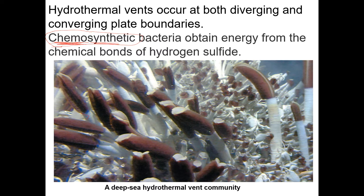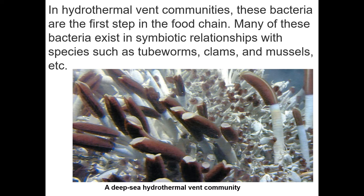Chemosynthetic bacteria grow in the dark at the bottom of the ocean, using hydrogen sulfide from hydrothermal vents as an energy source. These bacteria are eaten by tube worms, which are then eaten by crabs. Symbiotic bacteria often live inside tube worms, clams, or mussels in a mutualistic association.